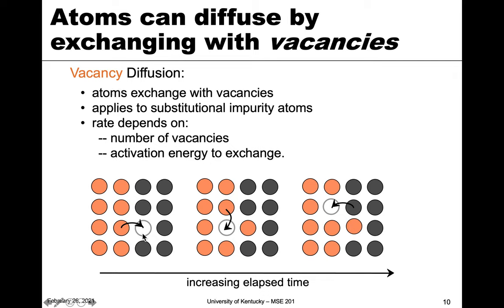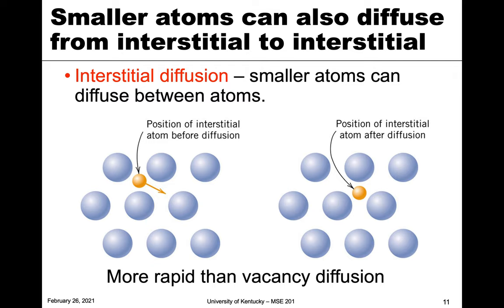The other mechanism involves interstitial sites. This doesn't happen for large atoms, but works for smaller atoms like carbon, which can move through the narrow tunnels between atoms into different interstitial positions. The advantage here is that there are many interstitial sites available, so interstitial diffusion tends to be more rapid than vacancy diffusion because the number of interstitial sites is much larger than the number of vacancies.